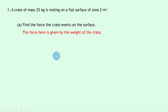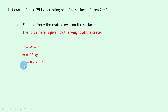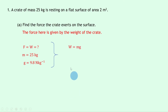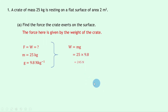So we can write down what we're trying to find, which is the force, which we can make equal to the weight. We know the mass is 25 kilograms and the gravitational field strength g on earth is 9.8 newtons per kilogram from the data sheet. Writing down our equation relating weight, mass and gravitational field strength we have w equals mg. Substituting in the numbers we have 25 times 9.8, which gives an answer of 245 newtons.